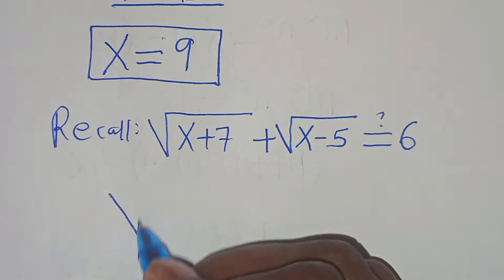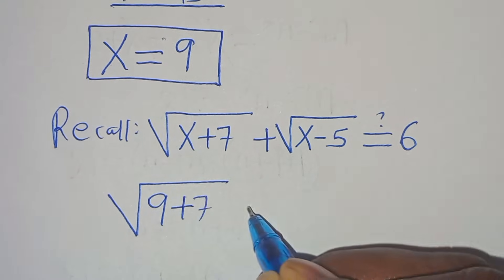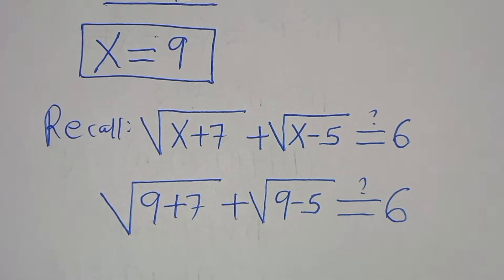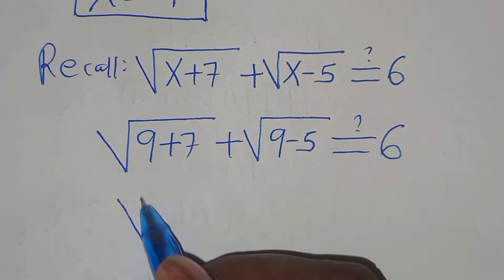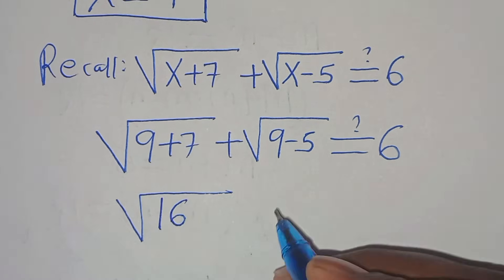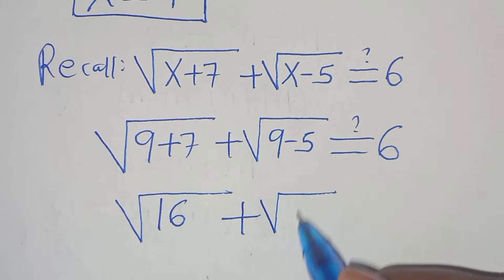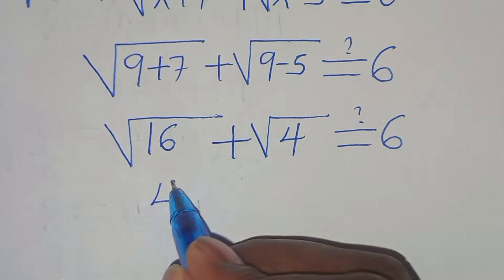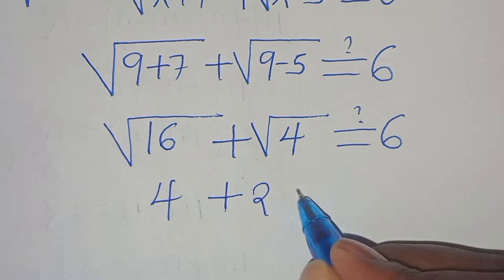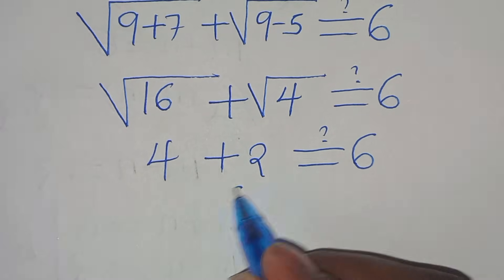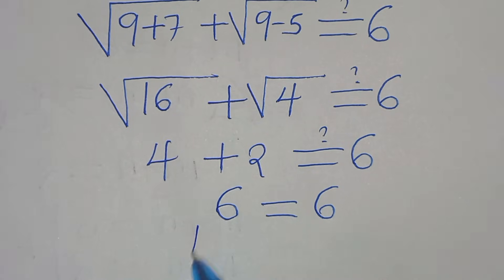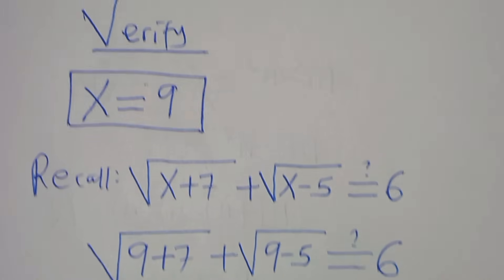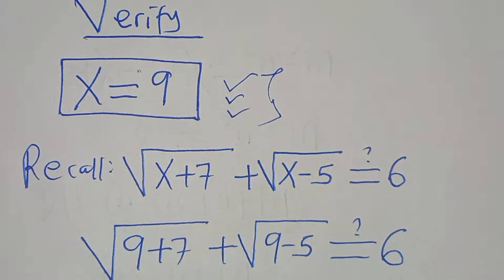Substituting: the square root of 16 plus the square root of 4 should equal 6. The square root of 16 is 4, and the square root of 4 is 2. So 4 plus 2 equals 6, and 6 equals 6. The left-hand side equals the right-hand side, confirming that x equals 9 satisfies the equation. Please like this math problem and subscribe — see you in the next video!